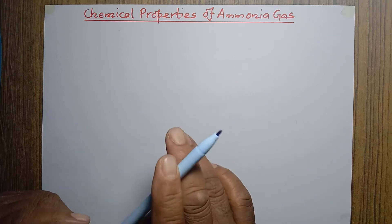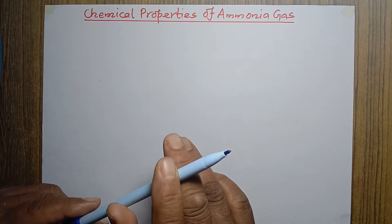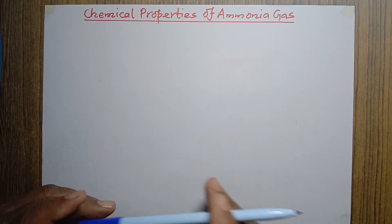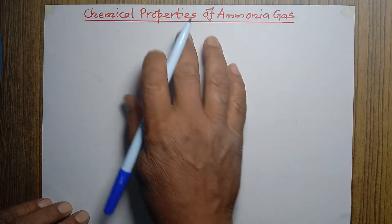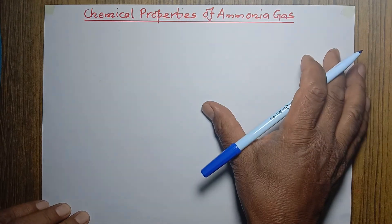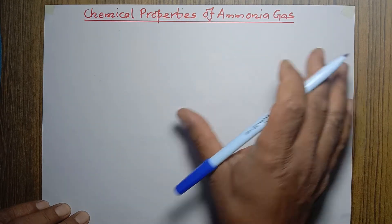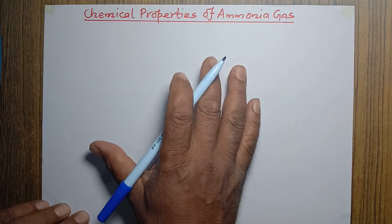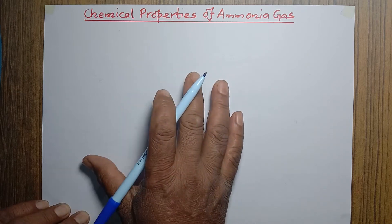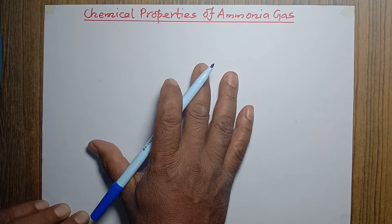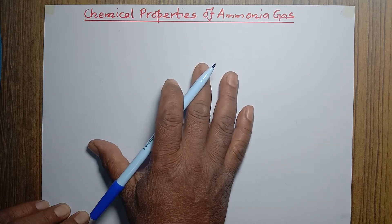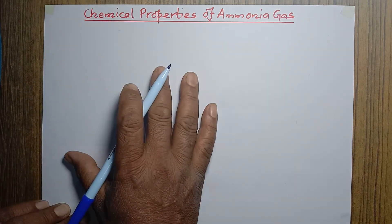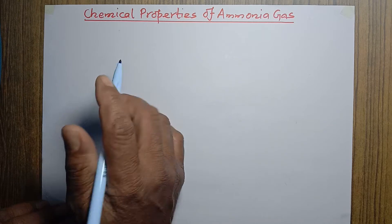Chemical properties of ammonia gas. I want to mention some of the chemical properties. As we know, chemical properties always come with chemical reactions. That's why let's start with chemical reactions.